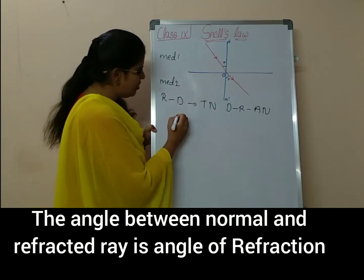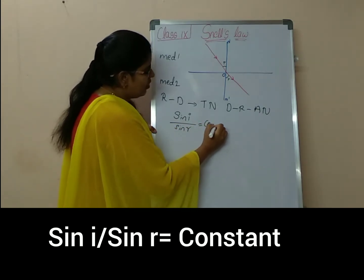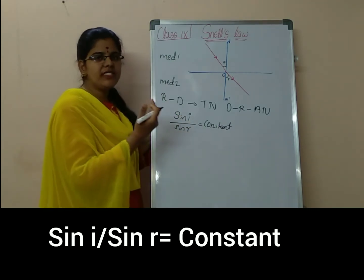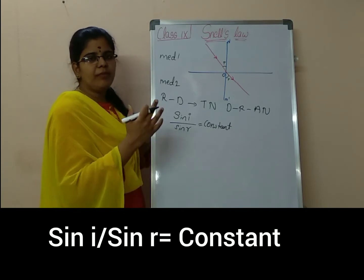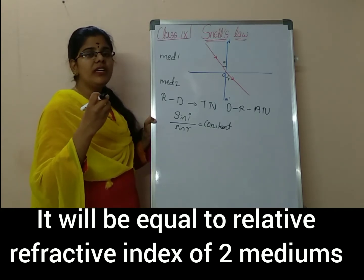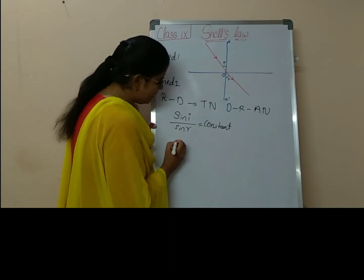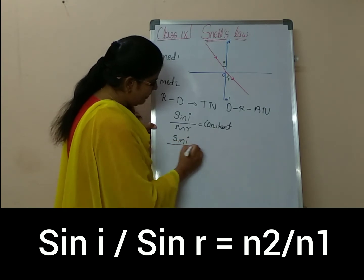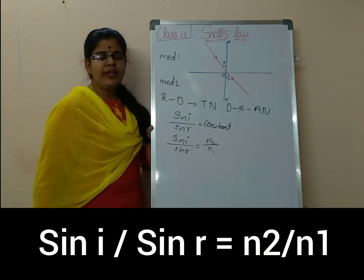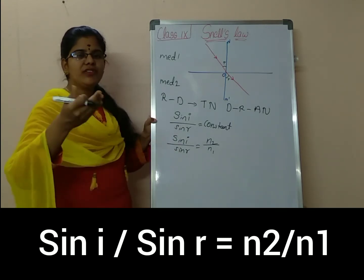So according to Snell's law, sin i by sin r is equal to a constant. The ratio of sine of the angle of incidence to the sine of the angle of refraction will be constant, and it will be equal to the relative refractive index of the two mediums. The relative refractive index is nothing but sin i by sin r equals n2 by n1 — that is, the ratio of the refractive index of the second medium to the refractive index of the first medium.